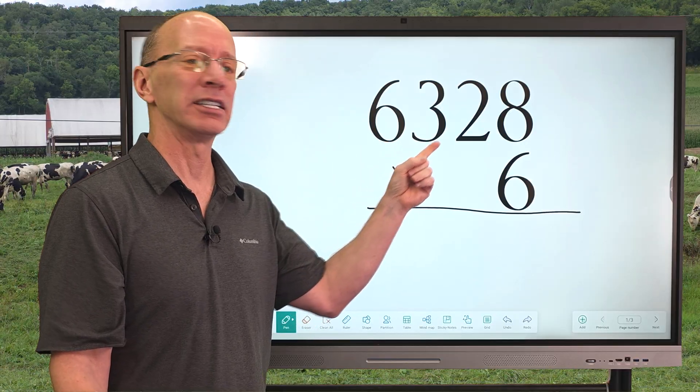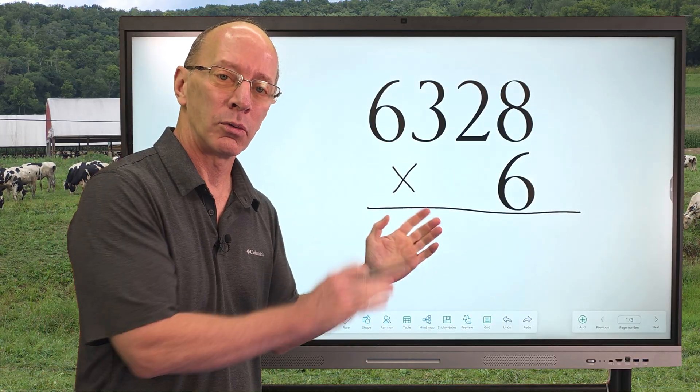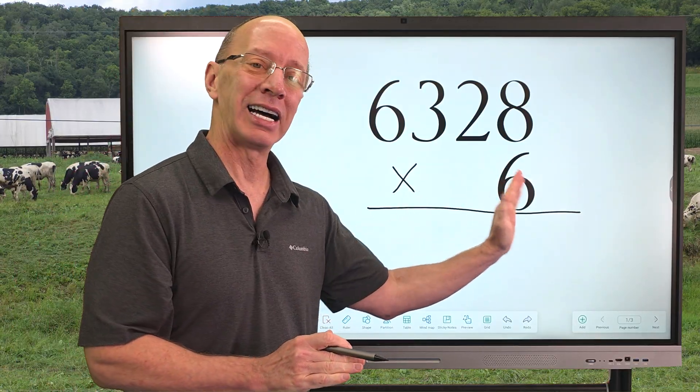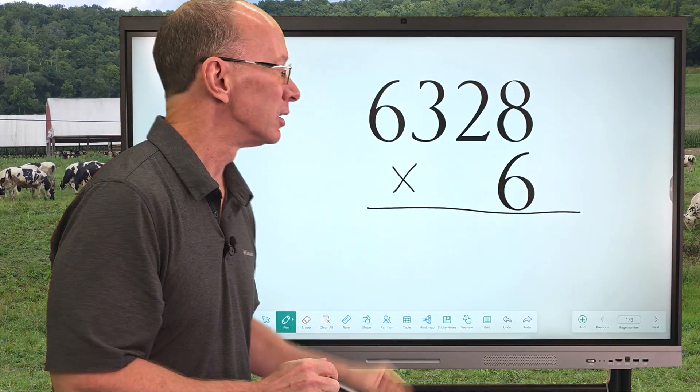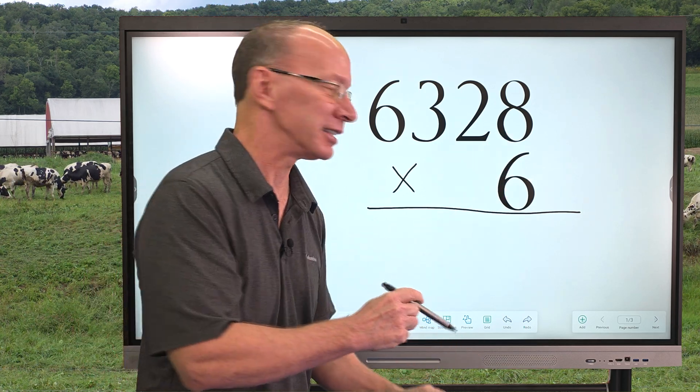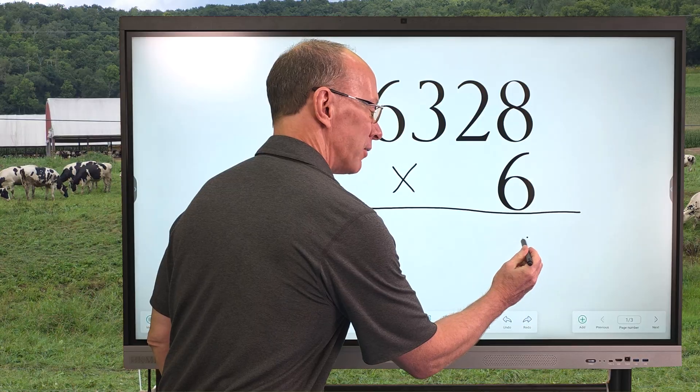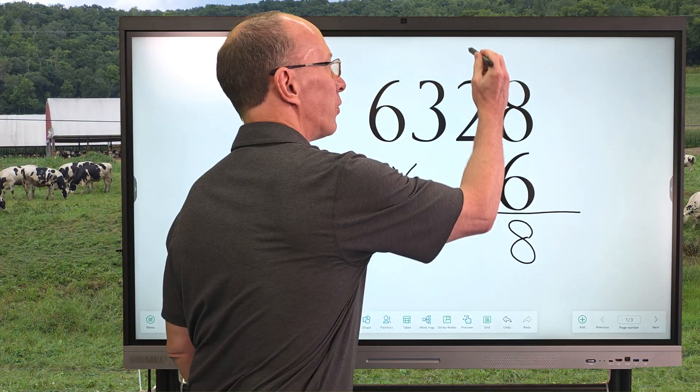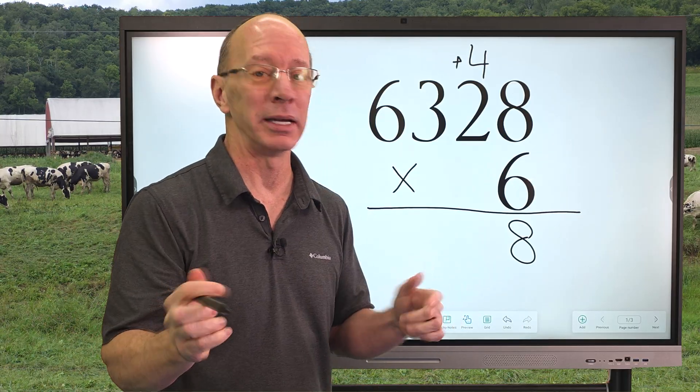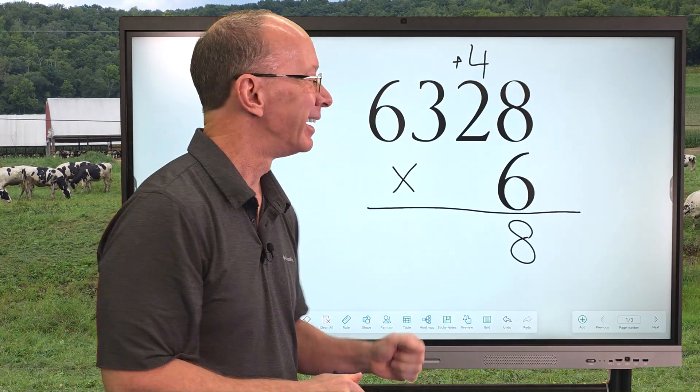I have 6,328 times 6. When we work on big numbers like this with multiplication, we're always working on this side of the problem. So, I'm going to take 6 times 8. 6 times 8, 48. So, I'm going to go ahead and put the 8 right here and I'm going to put the 4 up on the top right there and we're going to be adding that 4 in a little bit.